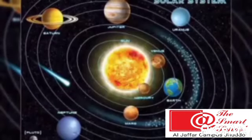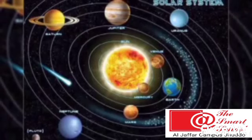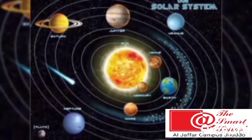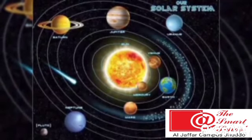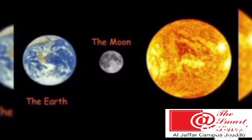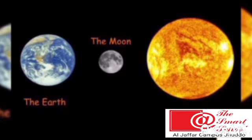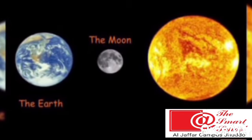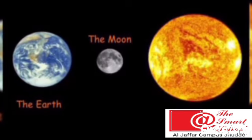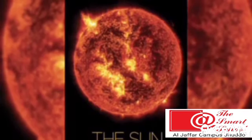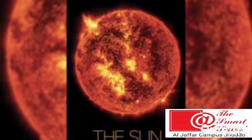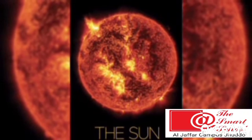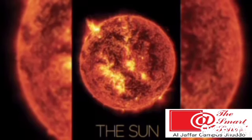The Sun. The sun is a huge star. It is in the center of our solar system. It looks bright and big because it is closer to the earth than other stars. It is 150 million kilometers away from earth. The sun has black spots on its surface called sunspots. The sun is a very important part of our solar system.